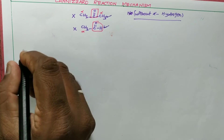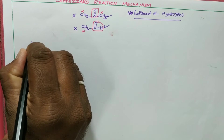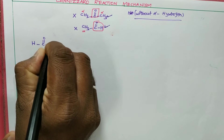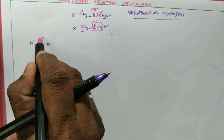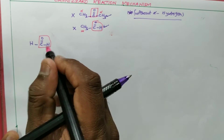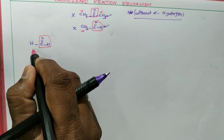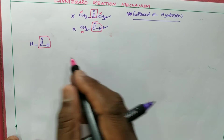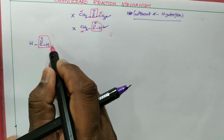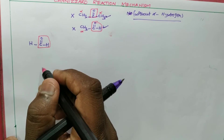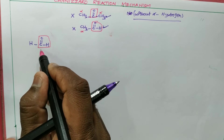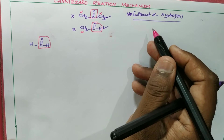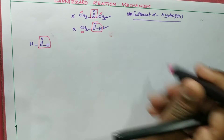Suppose I need a molecule without alpha hydrogen — for example, HCHO (formaldehyde). Here, my functional group is an aldehyde. There is not even an alpha carbon, so there is no alpha hydrogen. If there is no alpha carbon, there is no alpha hydrogen. These types of molecules will involve in the Cannizzaro Reaction. The molecules which do not have alpha hydrogen — that kind of molecule only involves in the Cannizzaro Reaction.